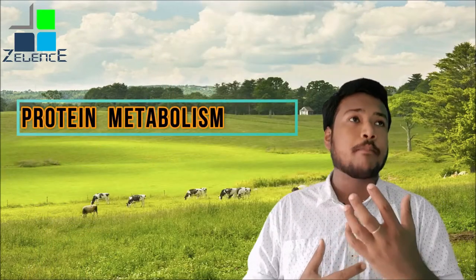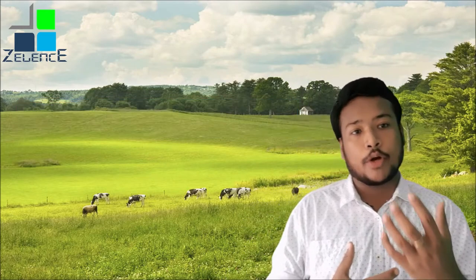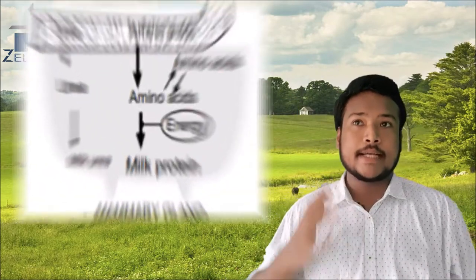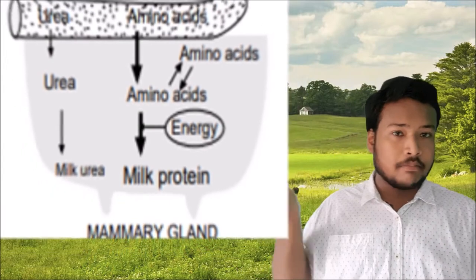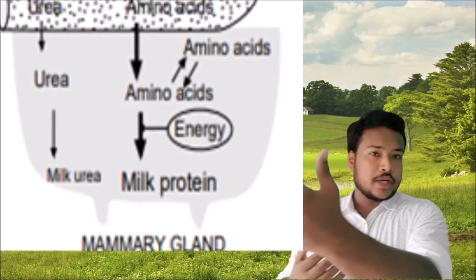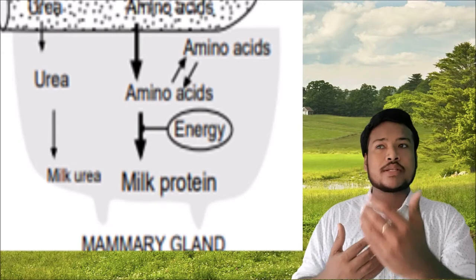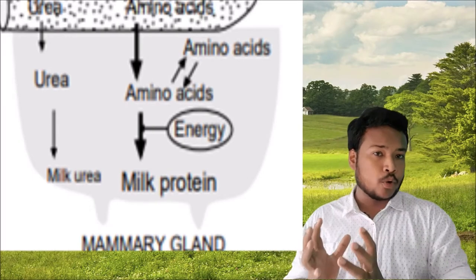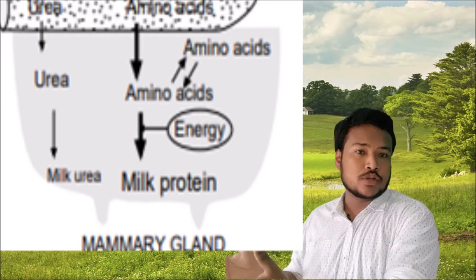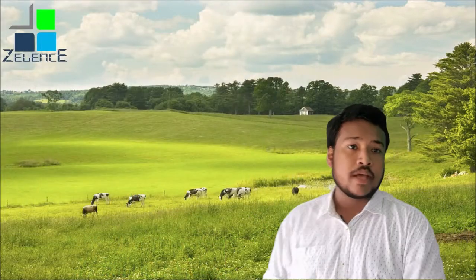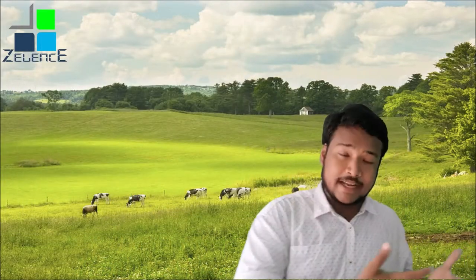Protein metabolism also plays an important role in producing better milk. It produces urea — the milk urea. Proteins break down into amino acids, and those amino acids then form milk protein. So milk protein and urea are produced by protein metabolism, while long-chain fatty acids are produced by lipid metabolism.